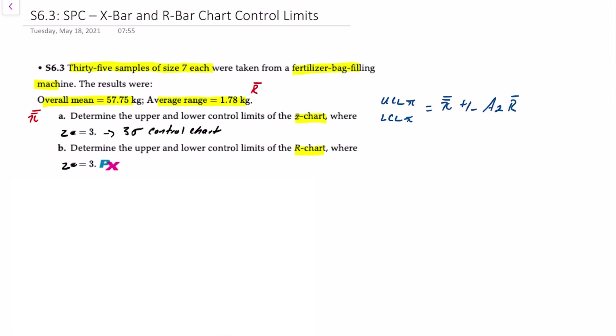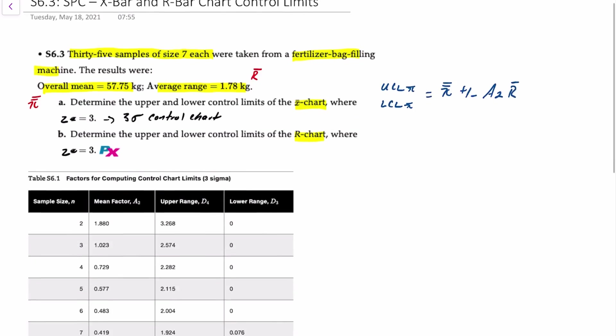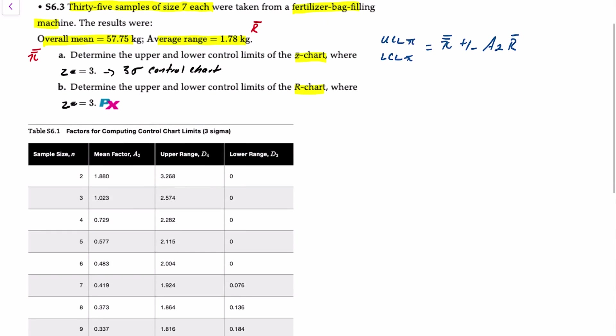A2 is a value of the mean factor from table S6.1 in your text that I've now included below for a three-sigma control chart. The point of the data telling us that z equals 3 for a three-sigma control chart is directly related to the factors we must pull from this table.